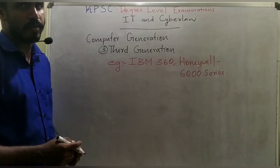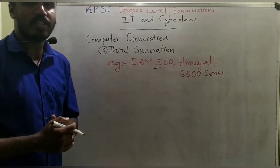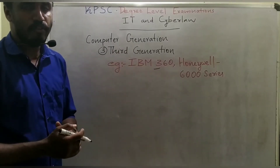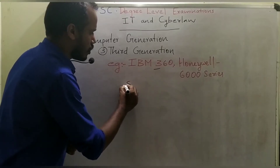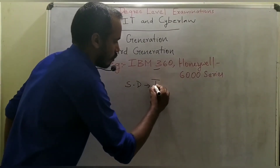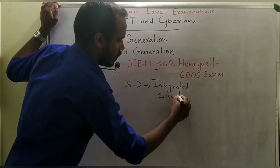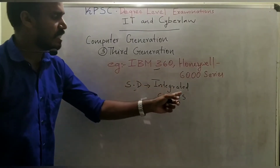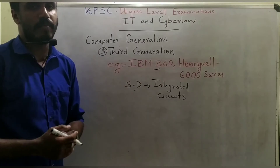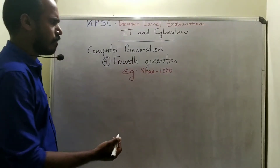Third generation computers use Integrated Circuits (IC) as switching devices. Examples include IBM 360 and Honeywell 6000 series. IBM stands for International Business Machine.